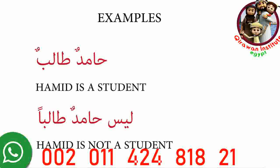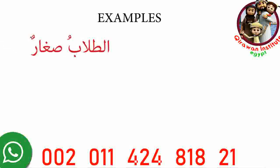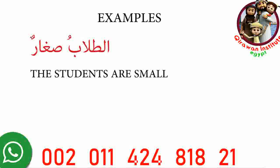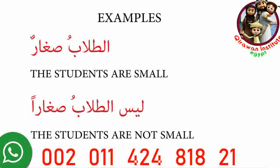Now let's examine example number two: ad tulabu sigharun — 'the students are small.' Ad tulab is a masculine plural noun. But in the negated form — leysa et tulabu sigharun — we add leysa, which is the masculine singular form, because leysa is placed first in the sentence. Ad tulabu becomes isam leysa, and sigharun changes to the accusative case as khabar leysa. Because it's a masculine adjective, we add that extra aleph at the end of it.